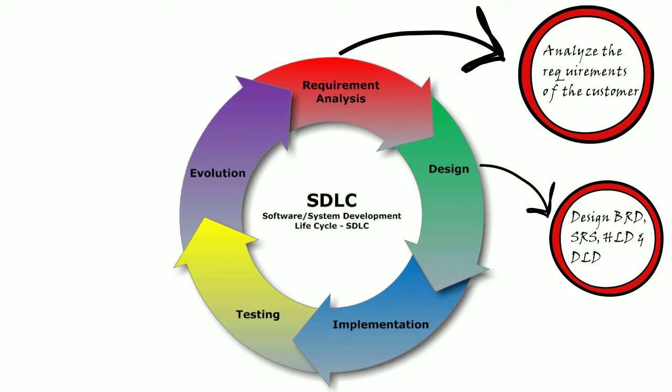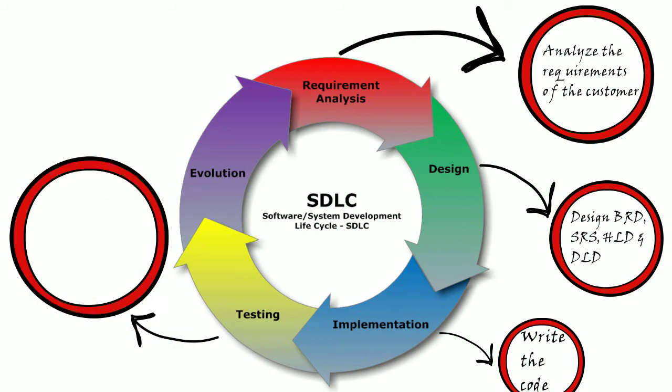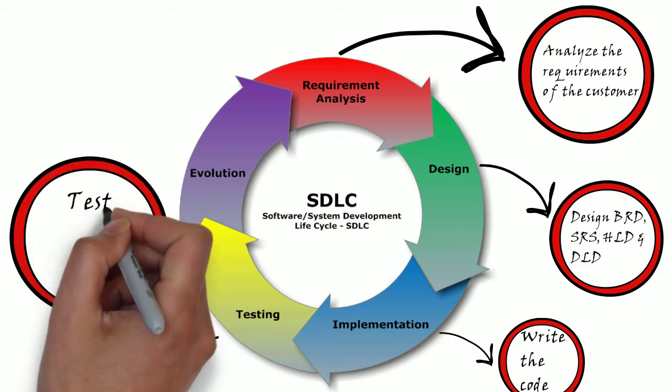During the coding or implementation stage, the software development happens. The next stage is testing. During this stage, the implementation of software against the customer requirements would be tested. The issues identified would be fixed and it moves to the next stage.